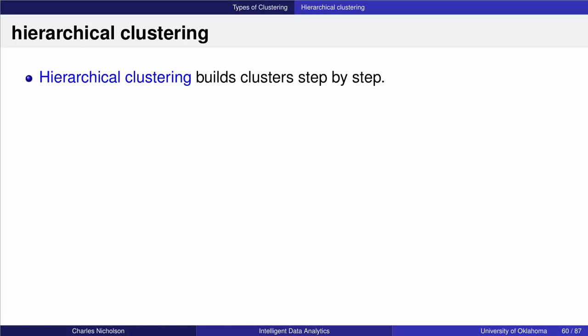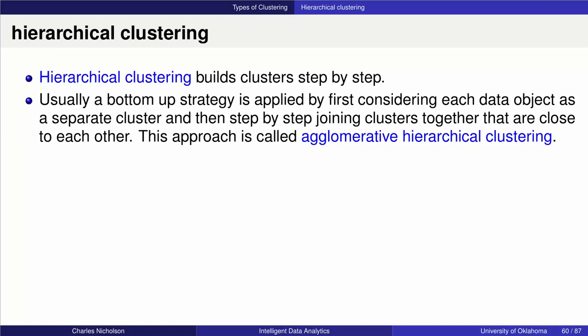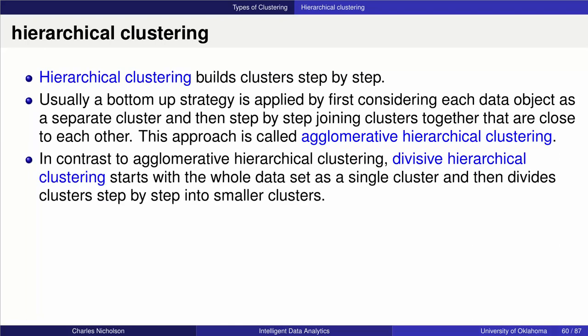In hierarchical clustering, we build clusters step by step. Usually it's a bottom-up strategy where you take all your individual data observations and find ways to aggregate them together. This technique is called an agglomerative hierarchical clustering approach. The contrast to that is a divisive hierarchical approach, which starts with all of your data as one cluster.